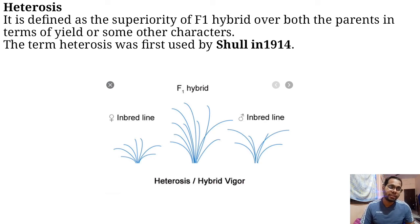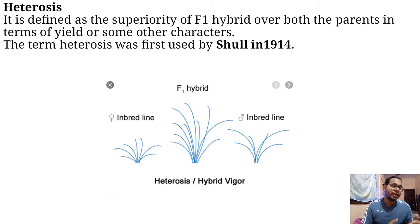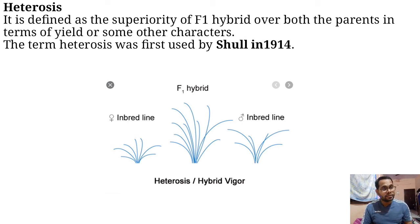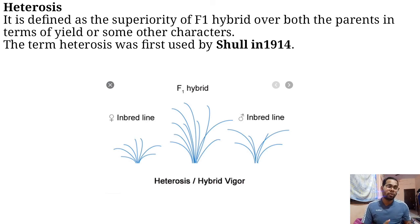For the explanation of this definition, you can understand from this diagram. There you can see there are 2 inbred lines, or you can say there are 2 parents — P1 parent and P2 parent, or inbred line 1 and inbred line 2. When you take these 2 parents and make crosses between them, you will get an F1 hybrid. This F1 hybrid may be superior or inferior. When you get the F1 hybrid superior in terms of yield or other characters — suppose plant height, number of seeds, number of tillers, seed weight.